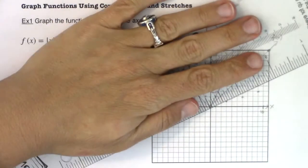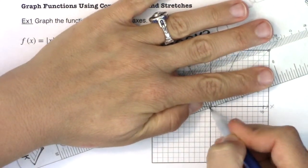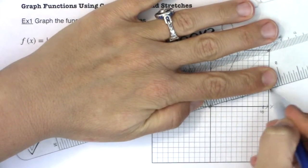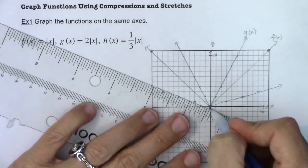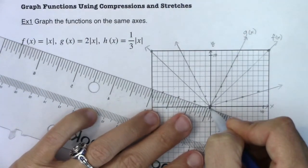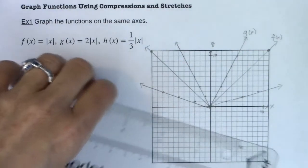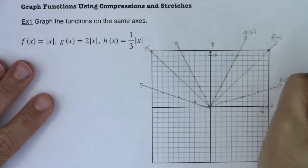And you can see that that one third, because it was a fraction, it really chopped down how fast this function was growing. It's only growing at a third of the rate of f of x. Okay, so this one is h of x.